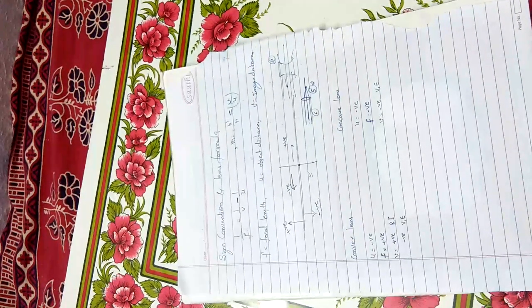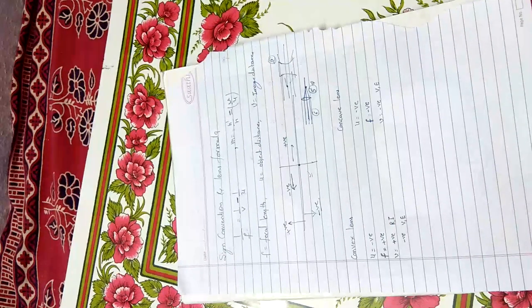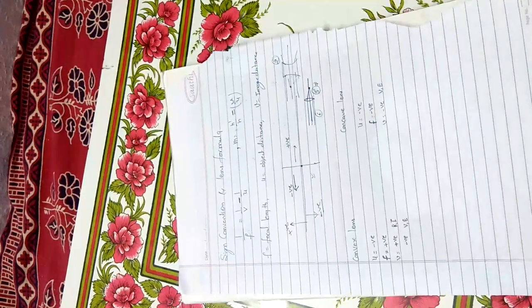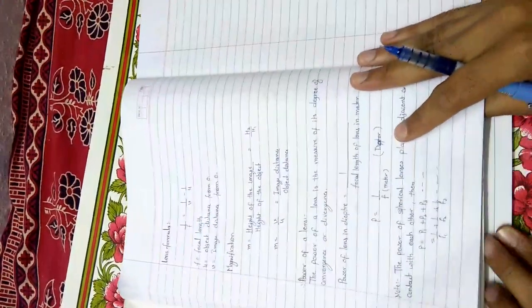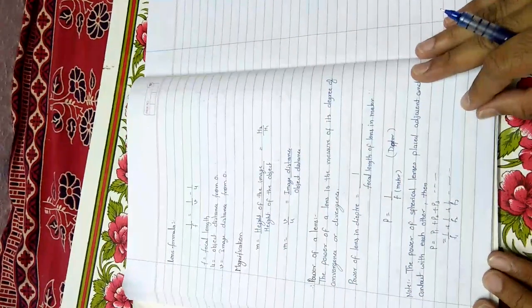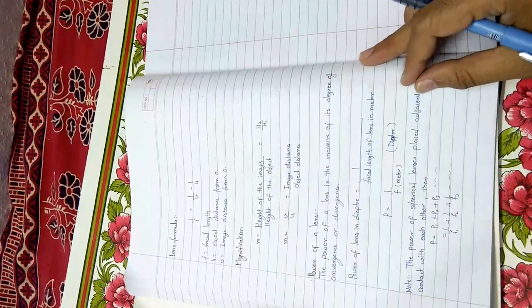Then after this, our next topic is power of lens. Now, what is power of lens? We will understand what power of lens is. We have seen there are two types of lenses: concave and convex. In convex lens, what was happening?